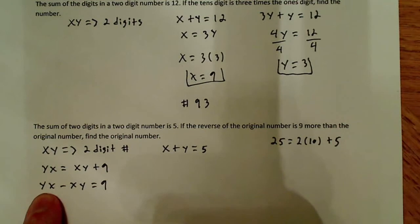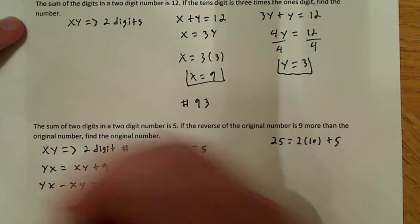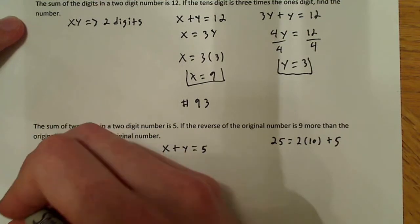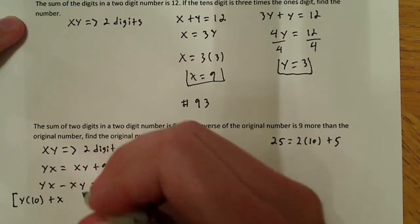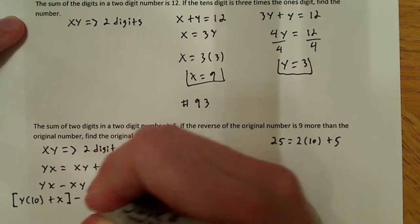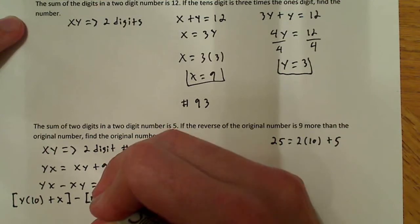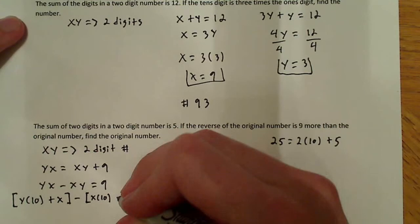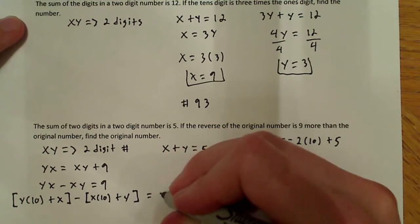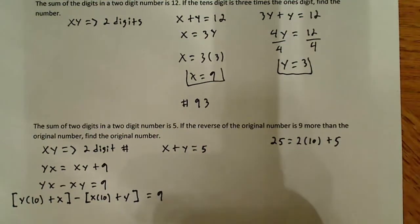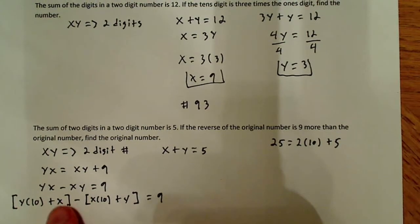So what's your tens digit? In this case, y is my tens digit. If I wanted to define this the same way as I did over here, I would do something like this. I would say y times 10 plus x, and I'll use brackets, minus x times 10 plus y, and that equals 9. So this is the original value and this is the reverse value.